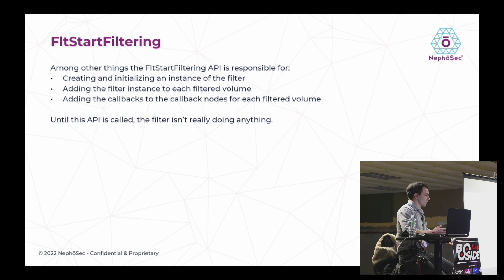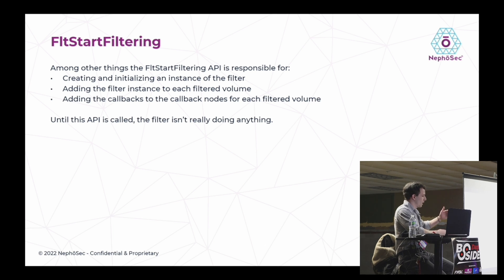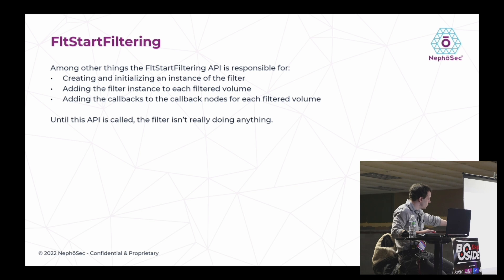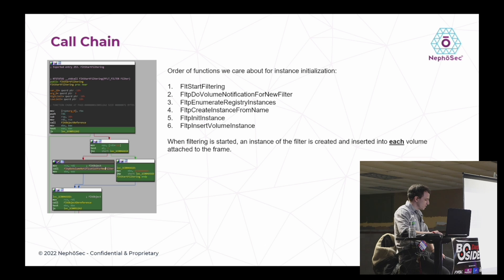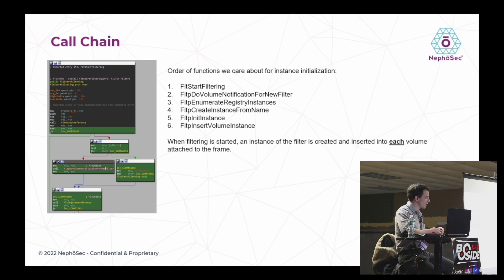Now that we know how filters are registered, what callbacks are, and the return statuses they need — how do we actually get this thing running? That's with the FLT Start Filtering API. FLT Start Filtering is responsible for taking and initializing an instance of the filter for every single volume already attached to the file system and adding the callbacks to each volume's callback table. Until this API is called, the filter is just hanging out — it hasn't been fully set up yet.